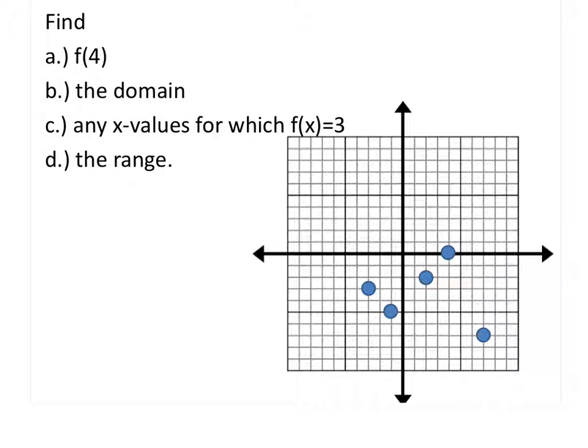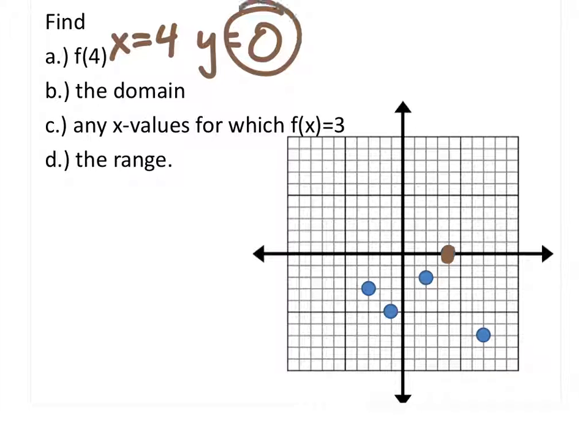So f of 4 on this is just asking what is the y value when x is 4. When x is 4, we have this point right here. Looks like y is 0, so 0 is really the answer.